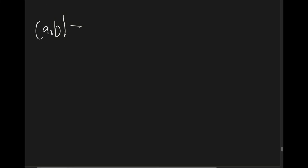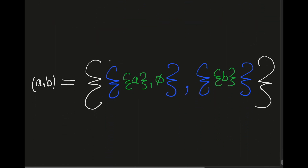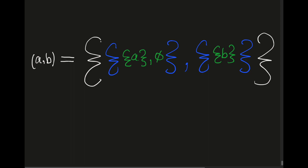Now as an exercise, I want you to explain in the comments why we do not define ordered pairs to be a certain set — what's the problem with that definition? And another exercise: I want you to explain why we can define ordered pairs in a particular way, why that definition does in fact work, and why it is useful to us.